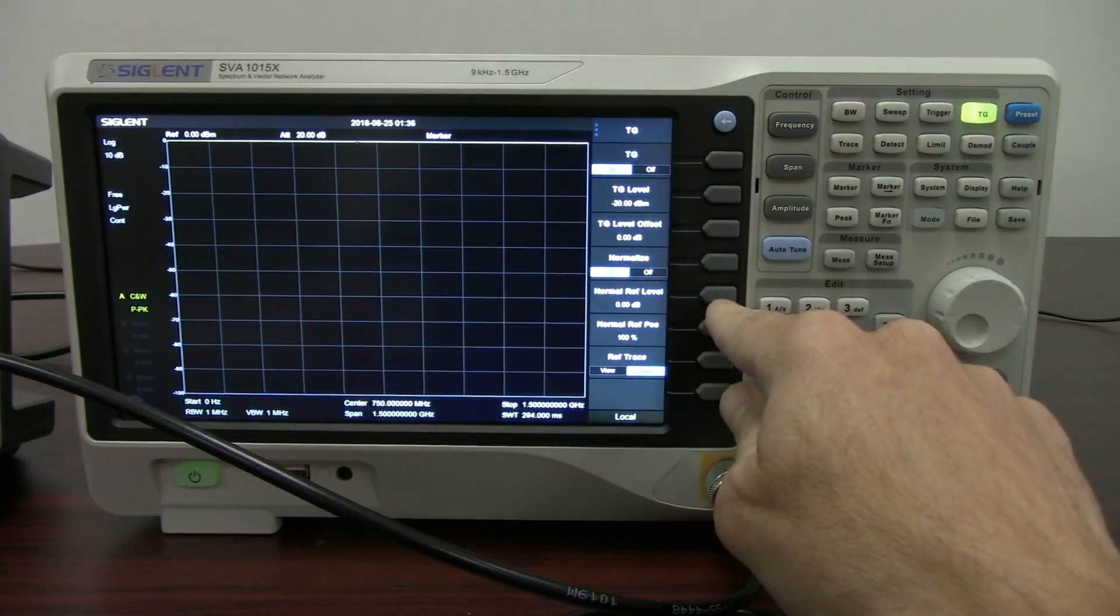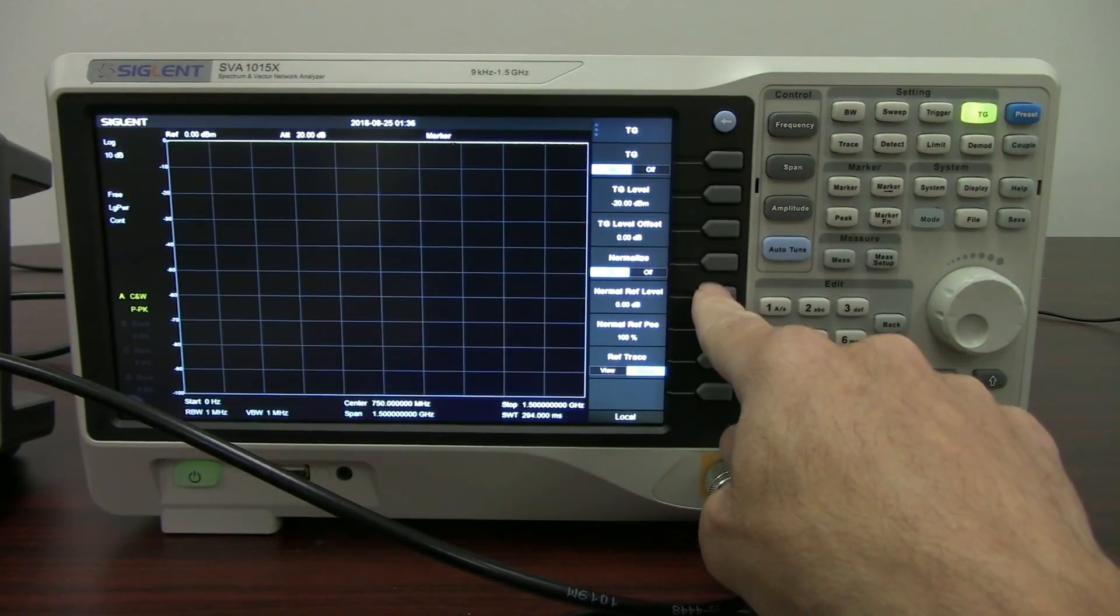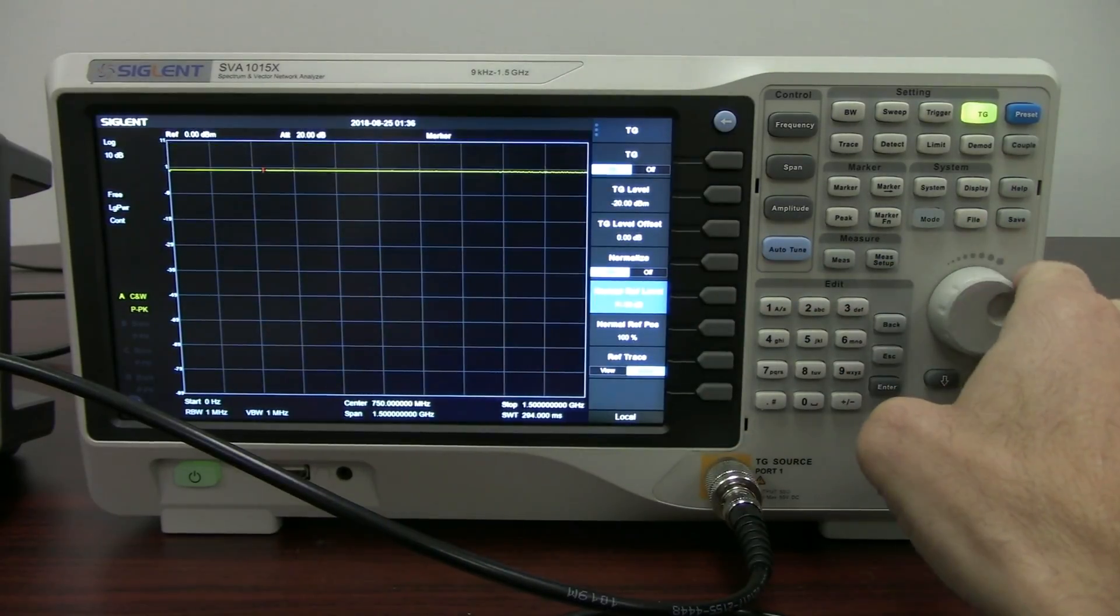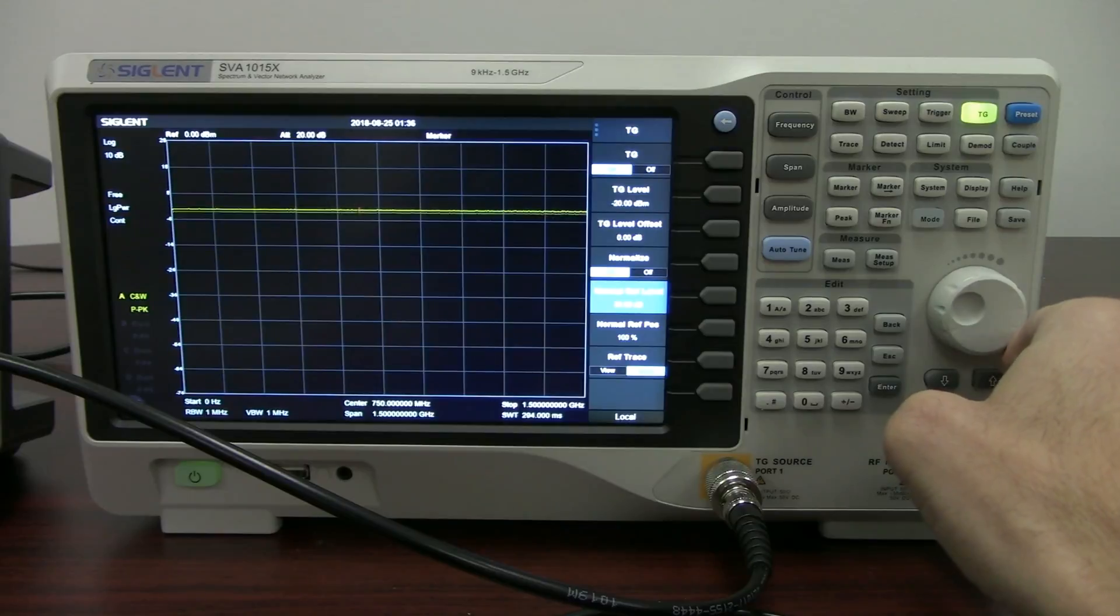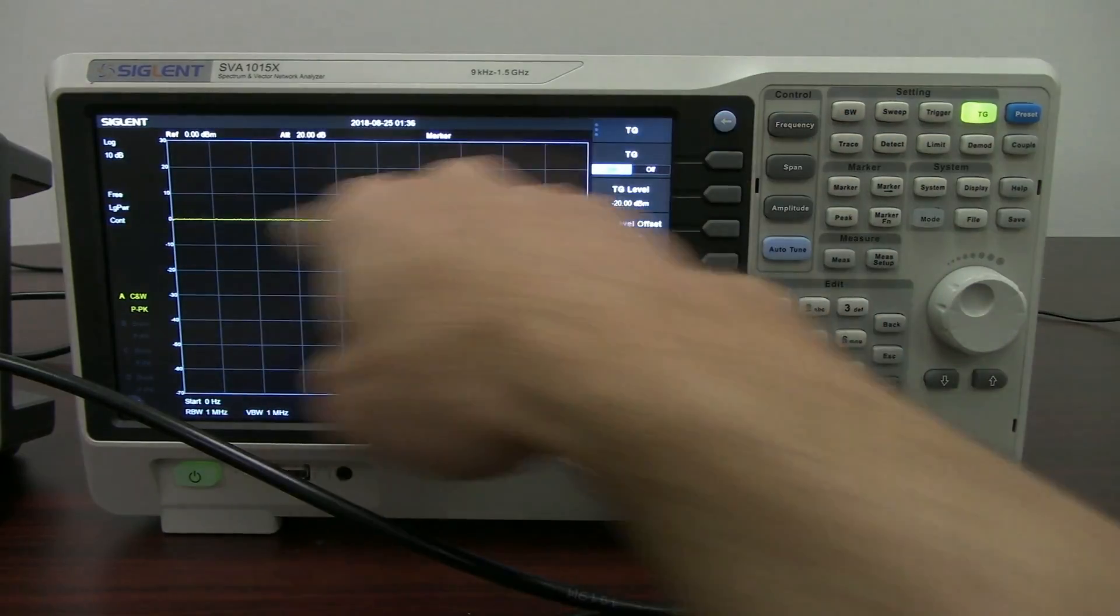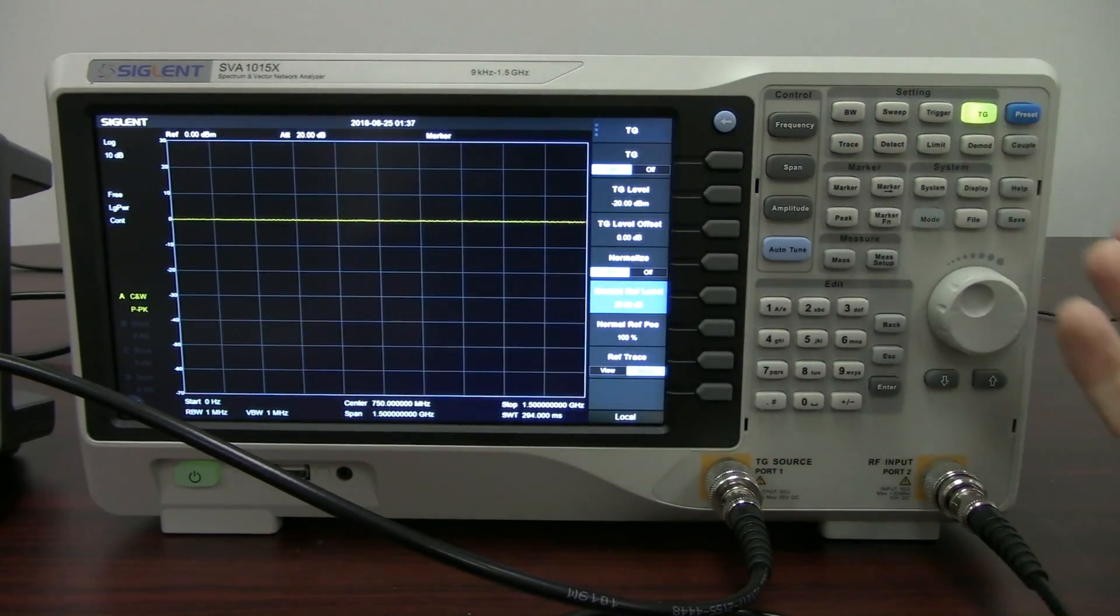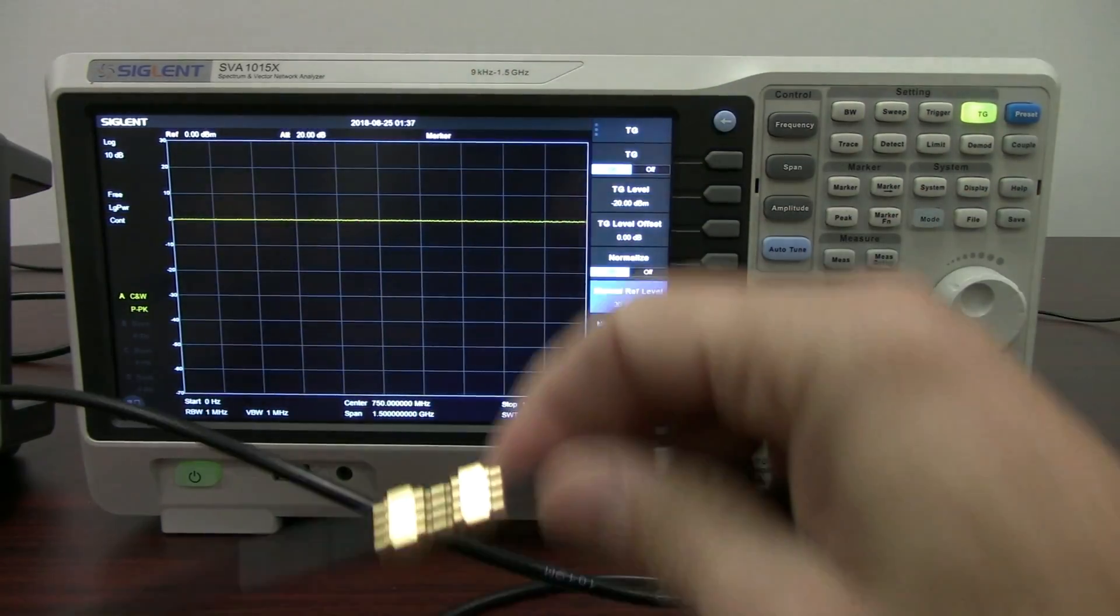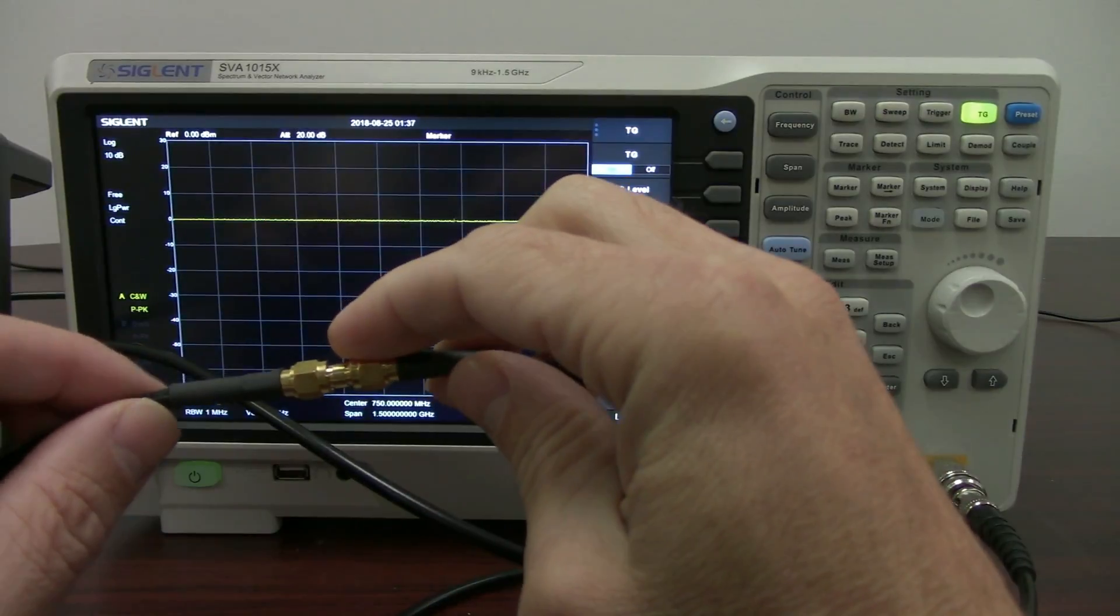Now what we can do is normalize, we can move the normalization reference level. So we're just going to go here and drop it down, and now you'll see that it's a nice flat line. Again, it's at zero dBm, which makes sense because we've normalized all of the losses of the cabling, so we effectively have a relative zero measurement. Now that is with this adapter in place.